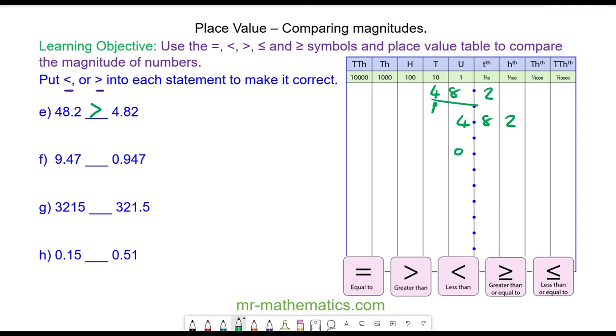For question F we have 9.47 and 0.947. And this number is bigger because we have nine units. So again, greater than.